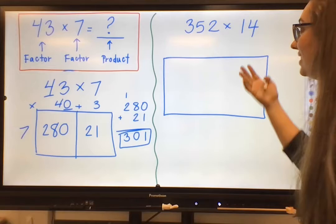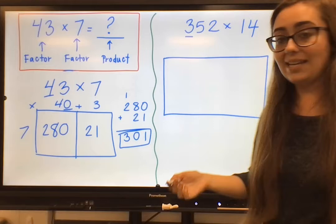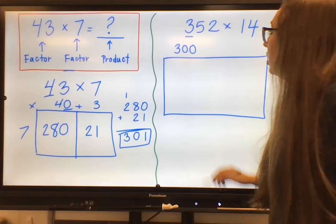So with this one, we have 352. Now, I need to isolate that based off of its place value. I see the first digit is in our hundreds place, so I can see that there are three hundreds. So I would want to write three hundreds, 300.